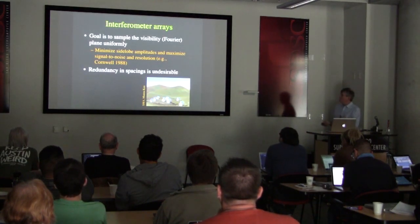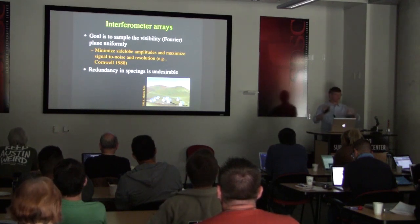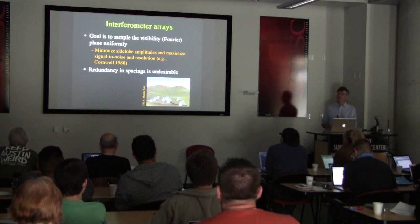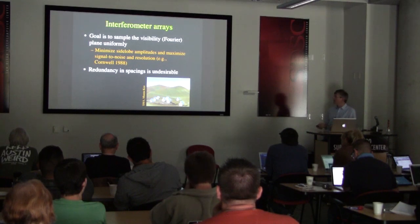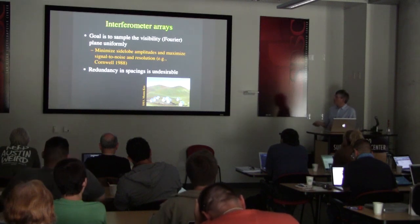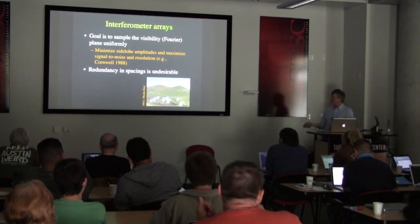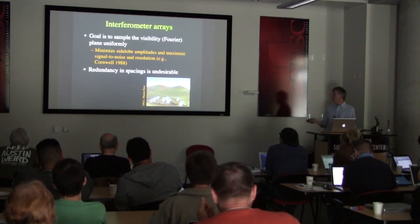The goal of interferometer arrays is to sample the visibility plane — the Fourier transform of the image — uniformly. The idea is to minimize side lobes and amplitudes, maximize signal-to-noise and resolution, while redundancy in spacings is undesirable.